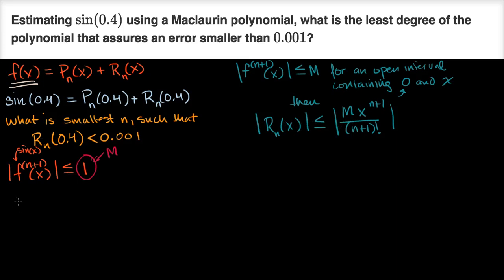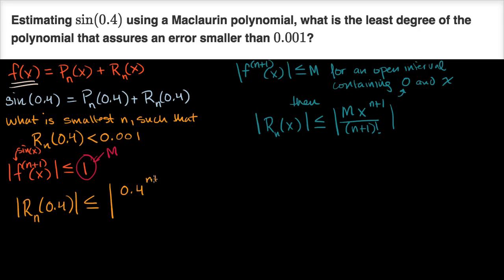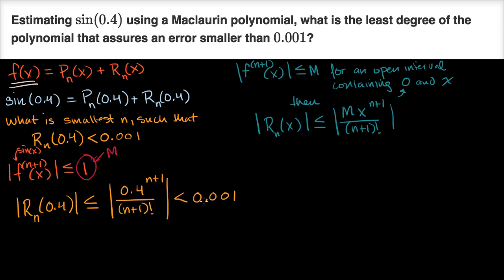We can now say that the remainder of our nth degree Maclaurin approximation at x = 0.4 is less than or equal to 0.4 to the (n+1) over (n+1) factorial — taking the absolute value of the whole expression. This is the Lagrange error bound. We want to find the situation where this is less than 0.001, which guarantees the remainder is less than 0.001. We just try increasing values of n until the bound falls below that threshold.